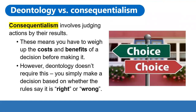This differs to consequentialism, which involves judging actions by their results. It involves making a cost-benefit analysis — you have to weigh up the costs and benefits of a decision before you make it, and this leads to whether you make the decision or not. However, this isn't the case for deontology. You simply make a decision based on whether the rules say it's inherently right or inherently wrong.